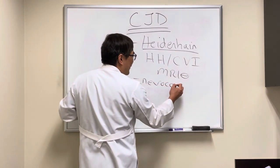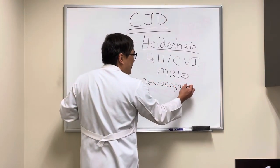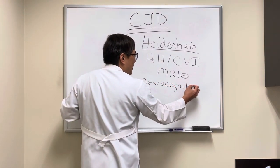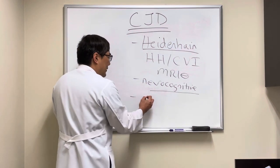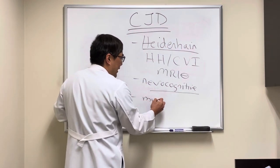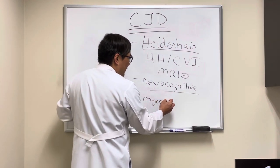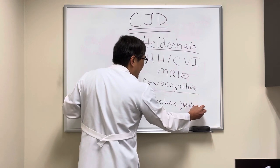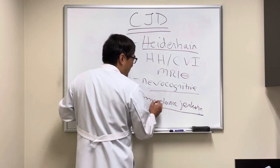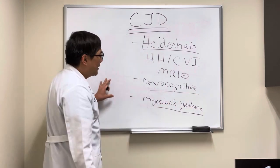Later, the neurocognitive pieces start appearing, and then in the end stage, you have myoclonic jerking and sometimes ophthalmoplegia.